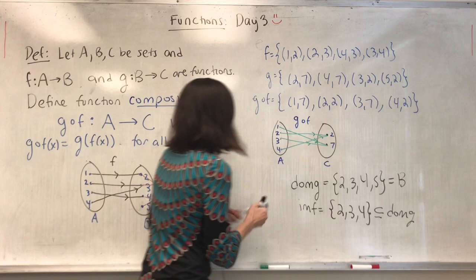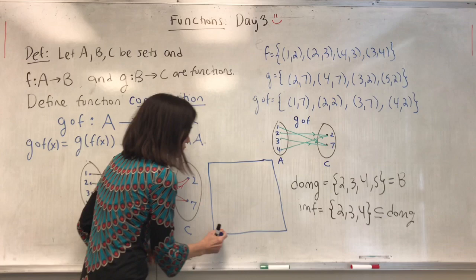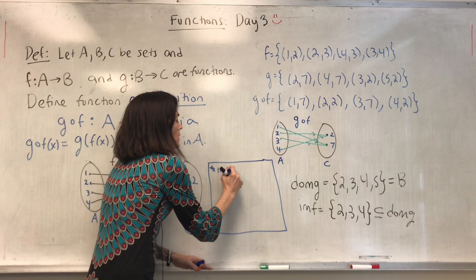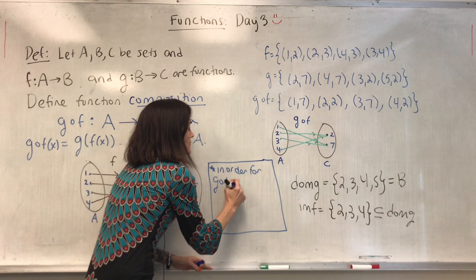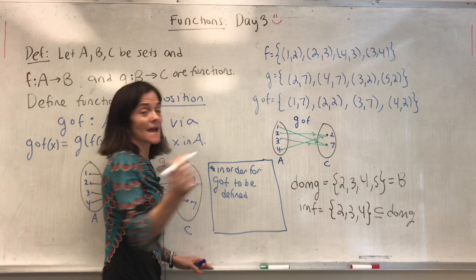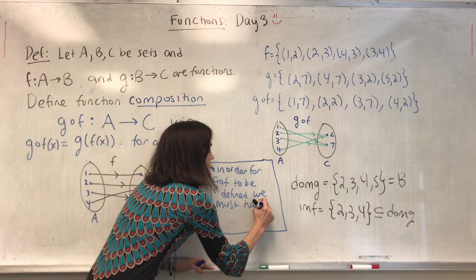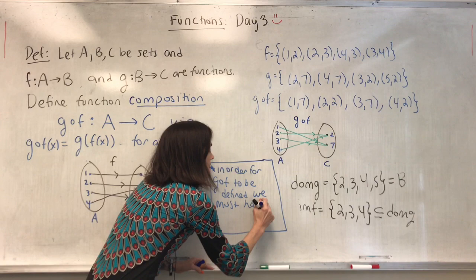In order for the composition G∘F to be defined, we must have that the image of F is a subset of the domain of G. Otherwise you can't define it.